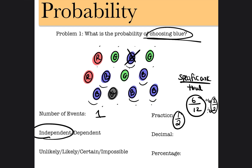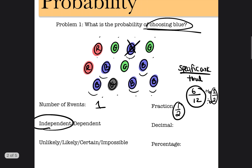Now we're going to write that fraction as a decimal. To write a fraction as a decimal, take the numerator and divide it by the denominator. So it would be 6 divided by 12, which equals 0.5. Written as a decimal, this probability is 0.5.